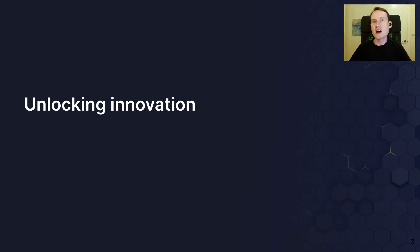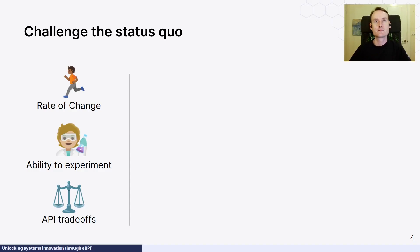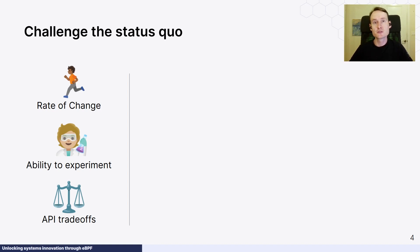Innovation is at the heart of the eBPF community. So how do we ensure that eBPF continues to be an engine for innovation? Let's recap the difficulties with the traditional kernel development process. Historically, it's been hard to change and extend the kernel to specific use cases. Additionally, it was difficult to deploy and experiment with new functionality and observe those solutions in real environments. There was a tension in the API trade-offs as well, for tailoring the kernel to specific tasks versus its role as a general purpose operating system.